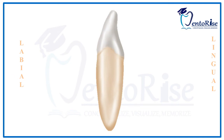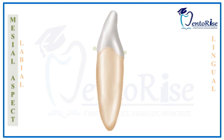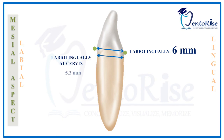Coming to the next heading: the mesial aspect. The labio-lingual dimension, measured from the crest of curvature on both the labial and lingual outlines as seen from this aspect, is 6 mm. The labio-lingual dimension in the cervical area is 5.3 mm.